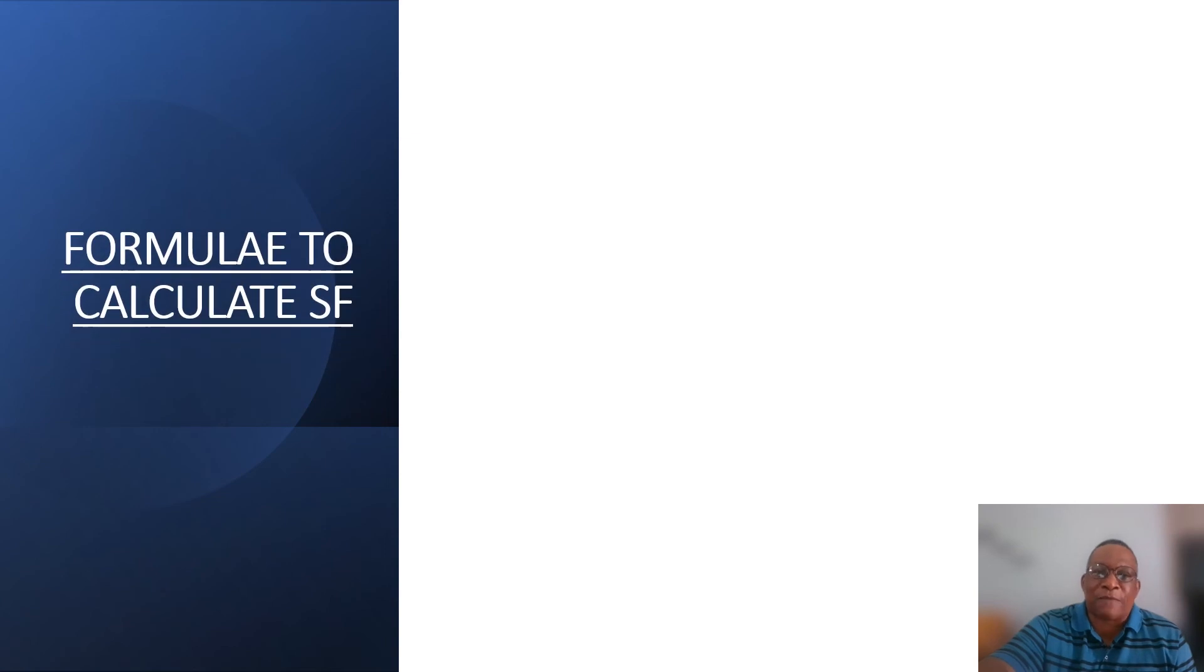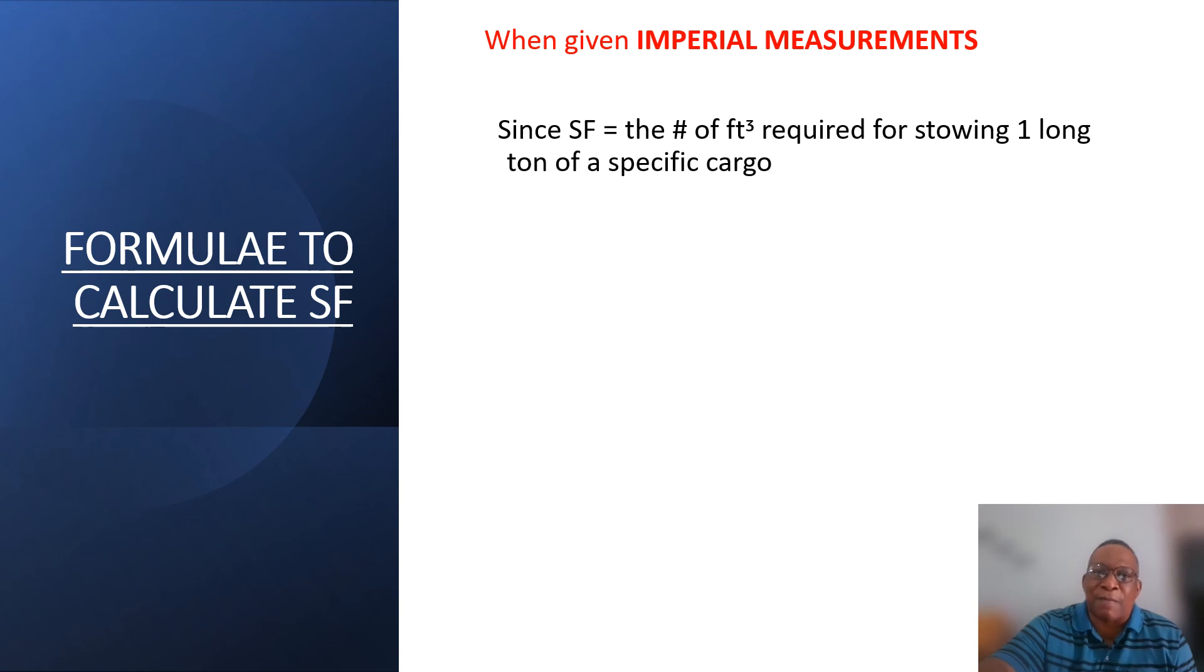Now let us look at formulas to calculate storage factor when given imperial measurements. And these imperial measurements might include cubic feet and pounds. You want to calculate the storage factor of that specific or particular cargo. Then you will use this formula where the storage factor would be equal to 2,240 lbs × volume in ft³ ÷ cargo weight in lbs.